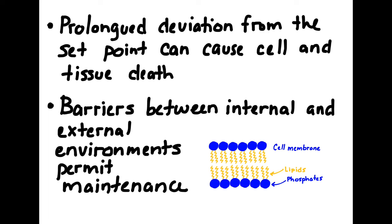Maintaining homeostasis often requires that an organism have an internal environment that is different from its external environment. Barriers between internal and external environments allow the organism to maintain an internal environment despite what's going on in the external environment. A great example of this is the cell membrane.